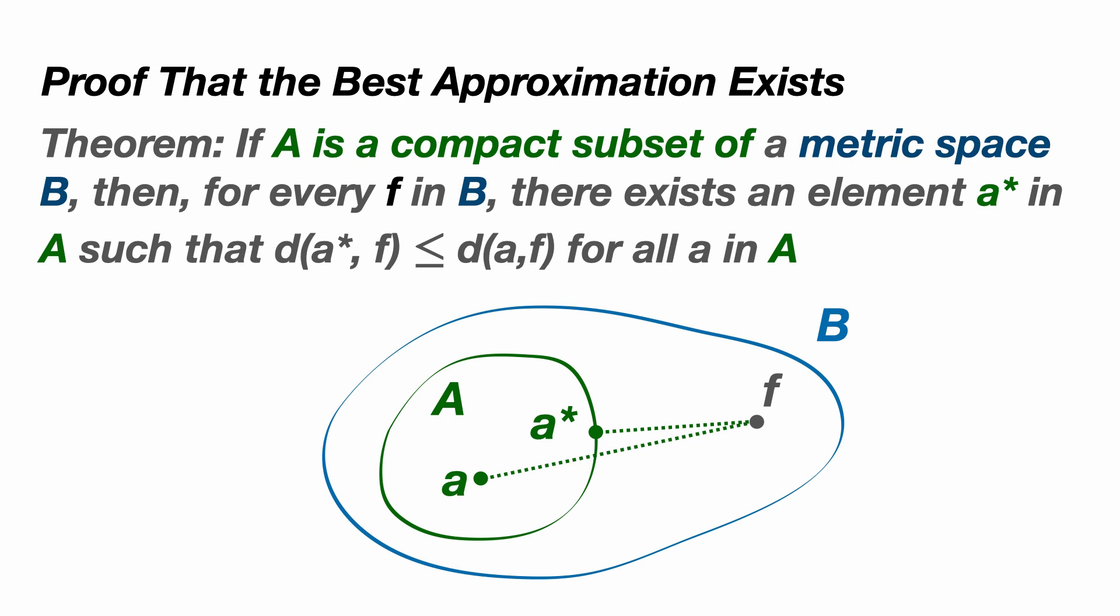So there we are. We've found that when making approximations in a metric space, it's possible to show that there's at least one point A star in capital A, our set of approximations, such that no other A in capital A is closer to f. An A star is therefore the best approximation from capital A to f.